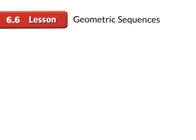If you remember, arithmetic sequences are when you start with a number — so like 4, 8, 12, 16 — and you add or subtract a number to get to the next term in the sequence.